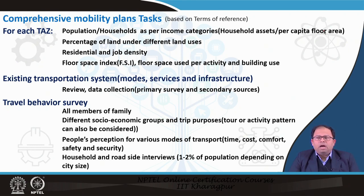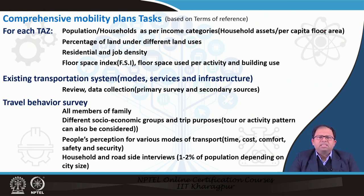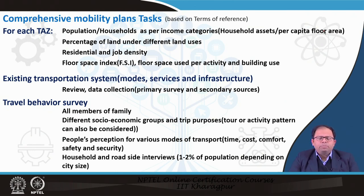Regarding the number of household surveys to be conducted, in the comprehensive mobility plan it is listed as 1 to 2 percent of the population depending on city size. In the Indian scenario this is very important because cities are very densely populated — maintaining a higher percentage would result in very large costs. Therefore, to limit cost and time, only 1 to 2 percent of population is considered.